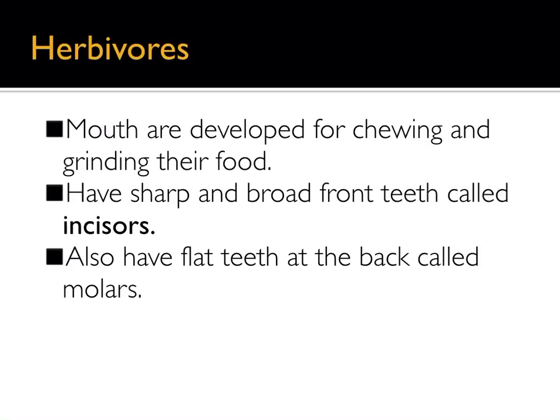Herbivores eat leaves, roots, grass, or even tree barks. They usually need to eat often during the day to obtain the nutrients they need. Their mouths are developed for chewing and grinding. They have sharp and broad front teeth called incisors to bite leaves and grass, and flat teeth at the back called molars to chew their food easily.